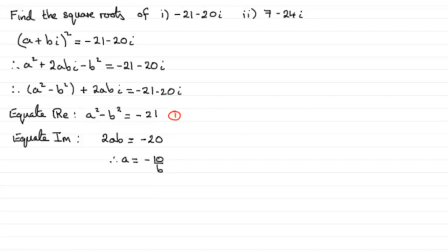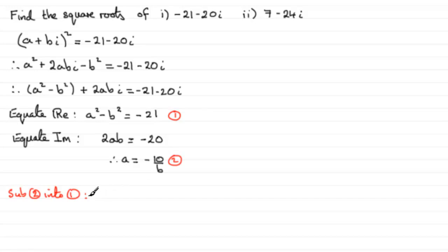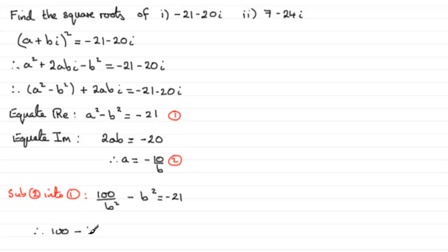Now we substitute equation 2 into equation 1. Substituting in, a squared becomes 100 over b squared, so we have 100 over b squared minus b squared equals minus 21. To eliminate the fraction, multiply through by b squared, giving 100 minus b to the power 4 equals minus 21 b squared.